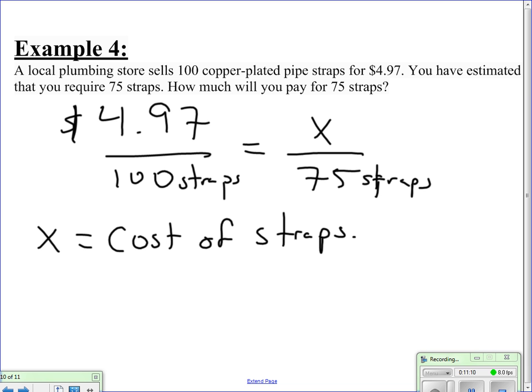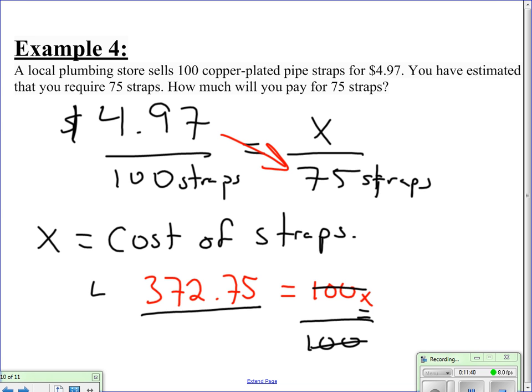Again, we're going to cross multiply. So, looking at these two values here. 4.97 times 75. And that's going to be equal to 372.75. And that's equal to 100x again. So, remember, I want to get x by itself to do that. I divide this side by 100. That gets rid of the 100. And I divide this side by 100.